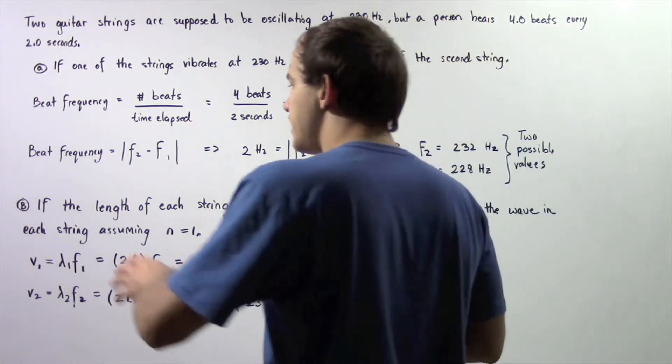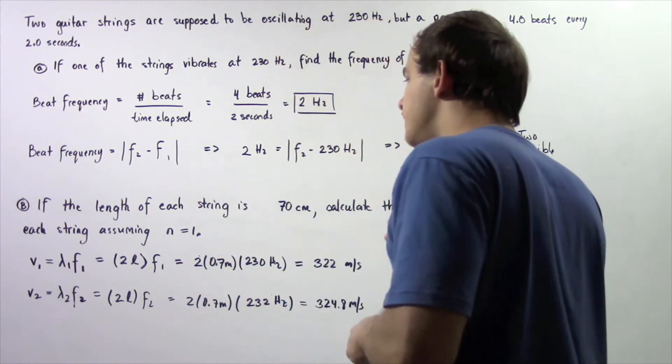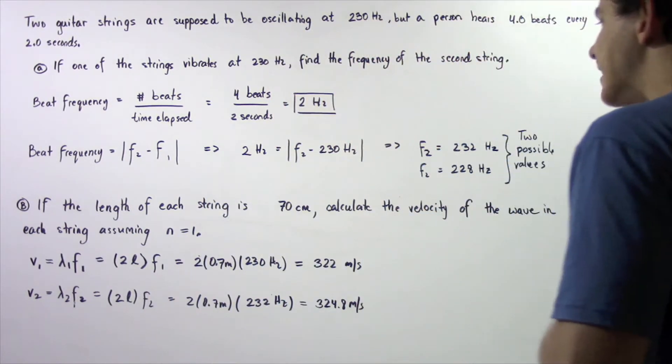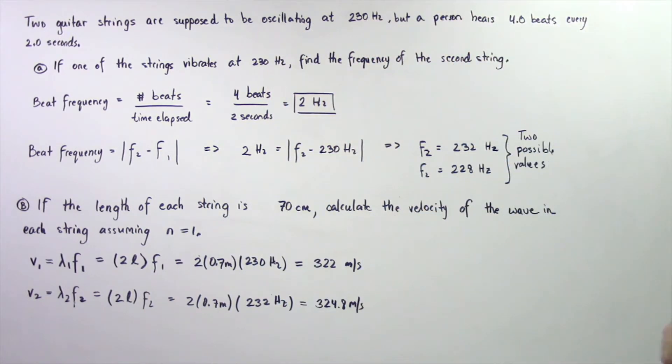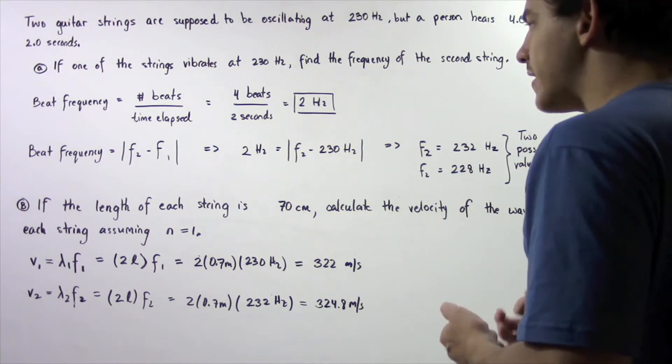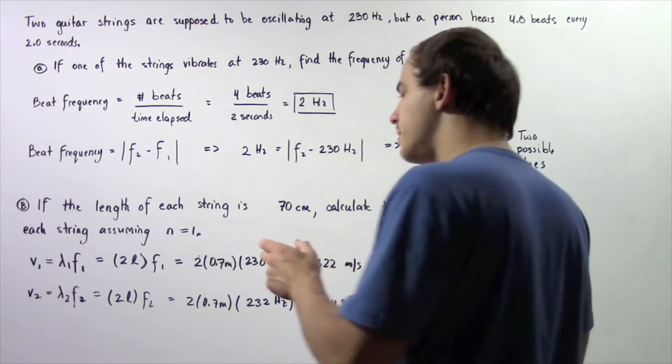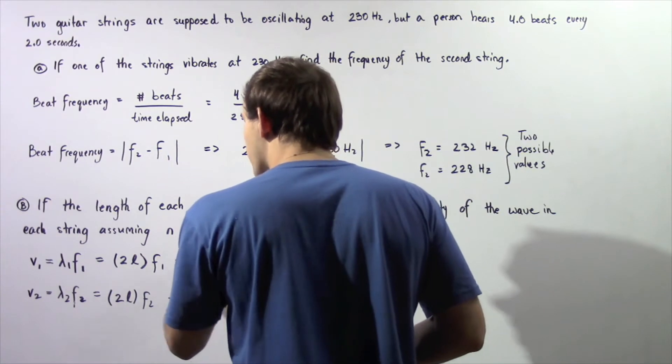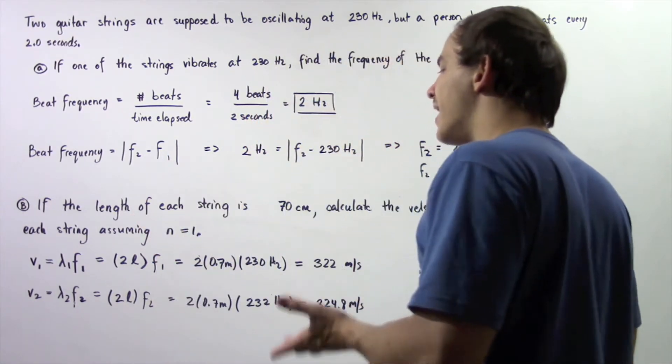Let's move on to part B. If the length of each string is 70 centimeters, calculate the velocity of the standing wave in each string assuming n equals 1, where n is our harmonic number.